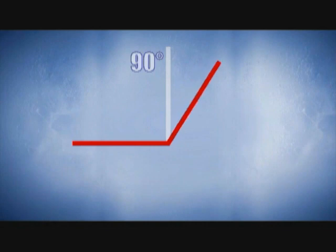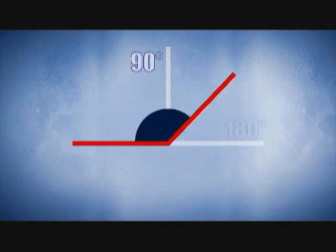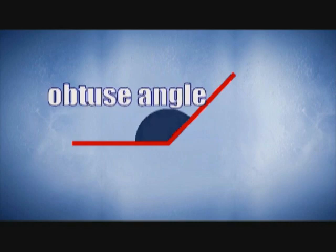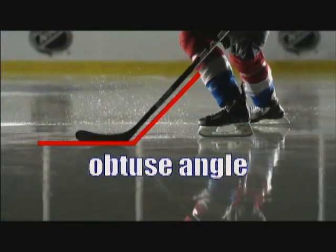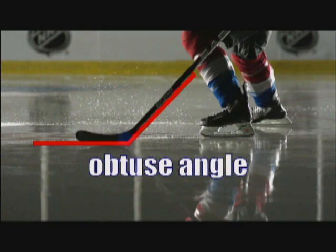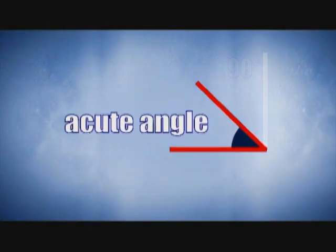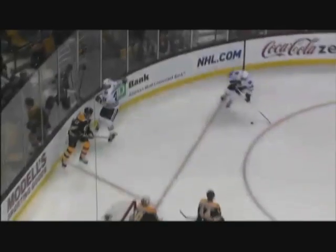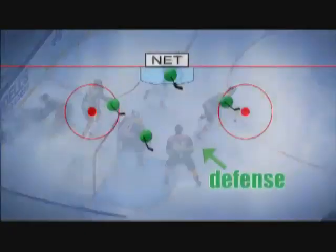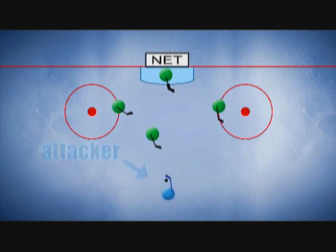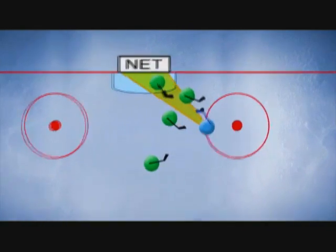Angles larger than 90 degrees but smaller than 180 degrees are called obtuse angles. A good example is what's called the lie of a hockey stick — the angle between the blade and the shaft — which can vary, but is often around 135 degrees. Angles smaller than 90 degrees are called acute angles, which are best visualized for those with quick eyes during play, watching defenders try to limit an attacker's angle of access, or angle of attack, to the net.